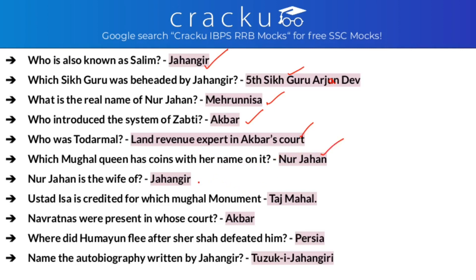Which Mughal queen had coins with her name on them? It is Nur Jahan, wife of Jahangir. Ustad Isa is credited for which Mughal monument? He is credited for the Taj Mahal as one of its master architects. The Taj Mahal took 22 years to build and was built in memory of Mumtaj Mahal. The Navratnas were present in the court of Akbar. Where did Humayun flee after Sher Shah Suri defeated him? He fled to Persia. The autobiography of Jahangir is Tuzuk-i-Jahangiri; Babar's is Tuzuk-i-Baburi.